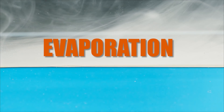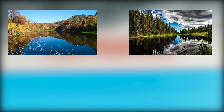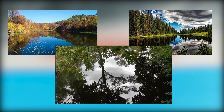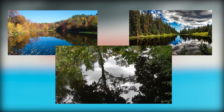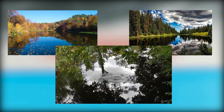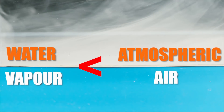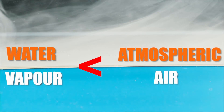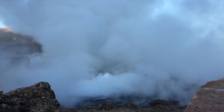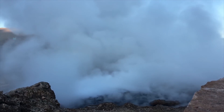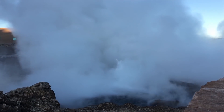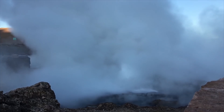Due to solar heating, there is continuous evaporation of water from rivers, lakes, and ponds around the globe. It is important to note that water vapor is lighter than atmospheric air. Due to its low weight, water vapor rises higher in the atmosphere and transforms into clouds.